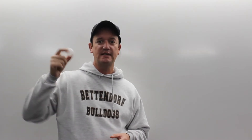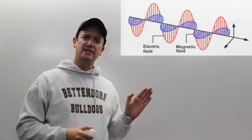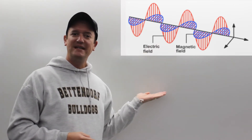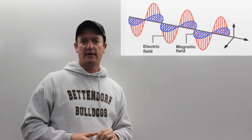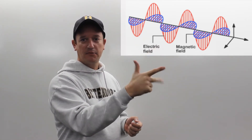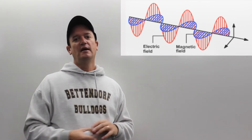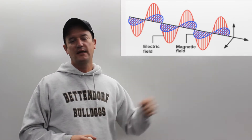You take a charge — it could be a proton, it could be an electron, it could be anything — and you vibrate it up and down. An electromagnetic wave is created just like any other wave; it starts with a vibration. In this case, it's the vibration of a charge. You'll notice there are two different fields moving through space: an electric field, and perpendicular to that, a magnetic field. One is going up and down, the other is going in and out of the board. You have an oscillating electric and magnetic field. That's what we consider electromagnetic radiation today — we'll talk later about photons.